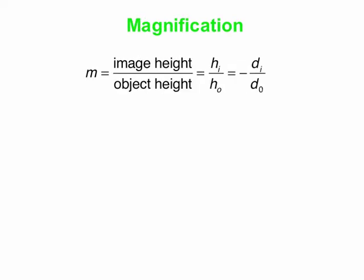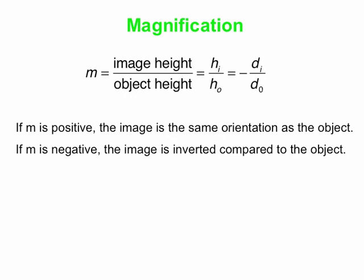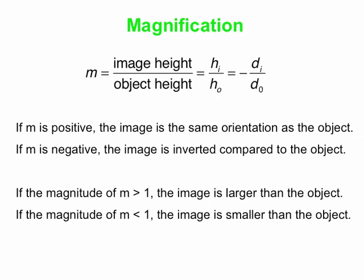Here's our magnification equation: magnification M = h_i / h_O, which also equals −d_i / d_O. If M is positive, the image is upright compared to the object; if M is negative, the image is inverted. If the magnitude of M is greater than 1, the image is larger than the object; if less than 1, the image is smaller. When M = 1, the image is exactly the same size and also the same distance from the lens as the object.